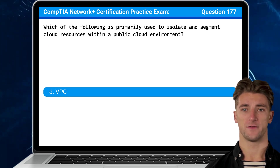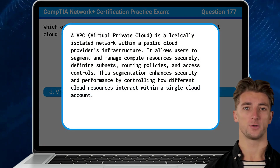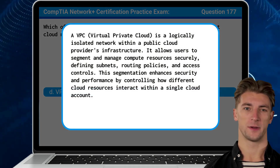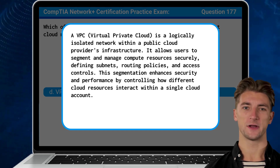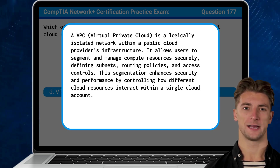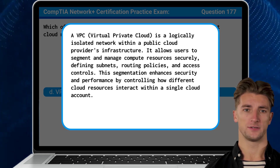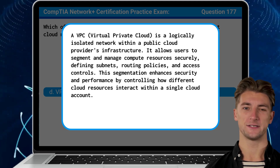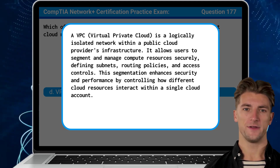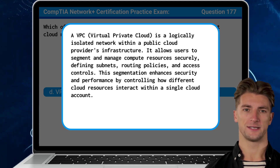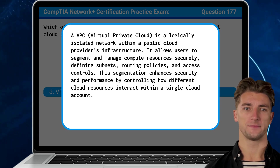The answer is D: VPC. A VPC, or virtual private cloud, is a logically isolated network within a public cloud provider's infrastructure. It allows users to segment and manage compute resources securely, defining subnets, routing policies, and access controls. This segmentation enhances security and performance by controlling how different cloud resources interact within a single cloud account.